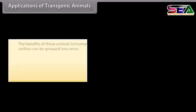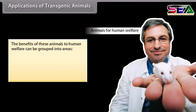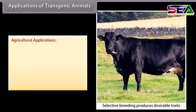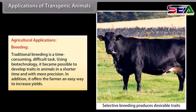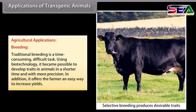Applications of transgenic animals: the benefits to human welfare can be grouped into agriculture, medicine, and industry. In agriculture, traditional breeding is a time-consuming, difficult task. Using biotechnology, it became possible to develop traits in animals in a shorter time and with more precision. In addition, it offers the farmer an easy way to increase yields.